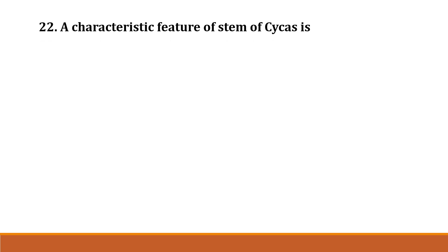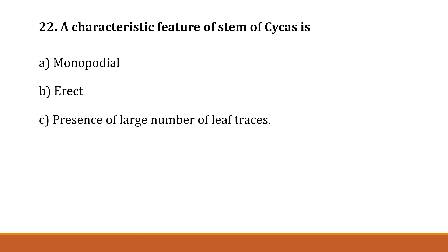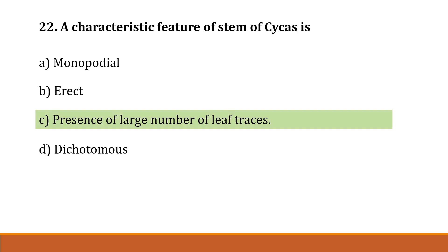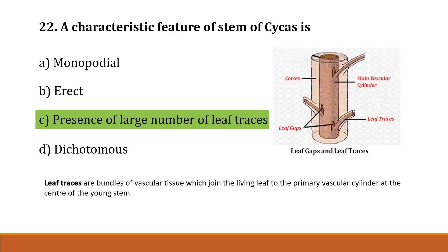Question number 22: A characteristic feature of the stem of Cycas is Option A: monopodial, Option B: erect, Option C: presence of large number of leaf traces, Option D: dichotomous. The correct answer is Option C, presence of large number of leaf traces. Leaf traces are bundles of vascular tissues which join the living leaf to the primary vascular cylinder at the center of the young stem.